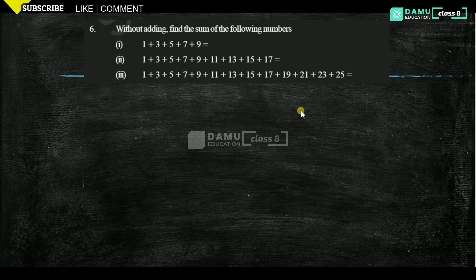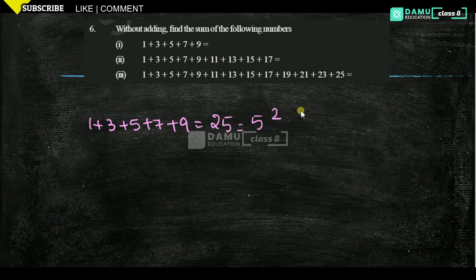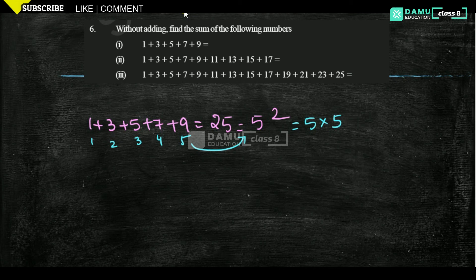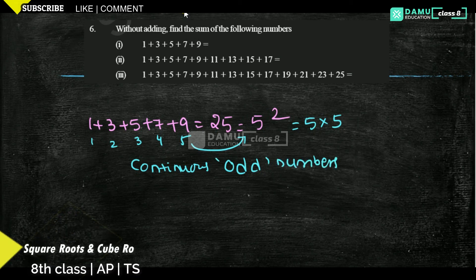Without adding, find the sum of the following numbers. We need to know the pattern. Let's try: 1 plus 3 is 4; 4 plus 5 is 9; 9 plus 7 is 16; 16 plus 9 is 25 — which is 5 squared. So if you count how many terms there are: 1, 2, 3, 4, 5 — there are 5 continuous odd numbers, and the sum equals 5² = 25.